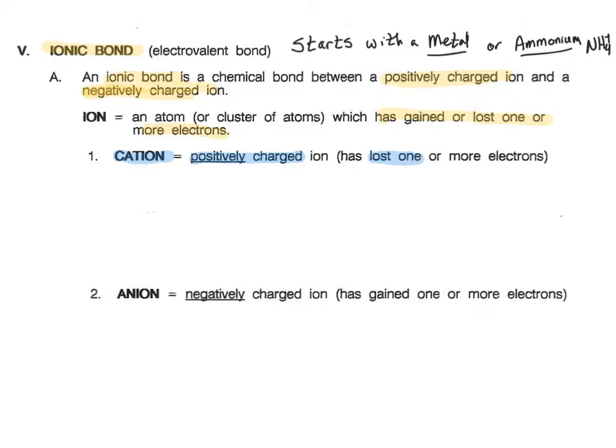For example, we could look at sodium. It likes to lose one electron and becomes positively charged. Or calcium, which has two valence electrons extra. It likes to lose two electrons and become a positive two charge. Those are both forms of cations.